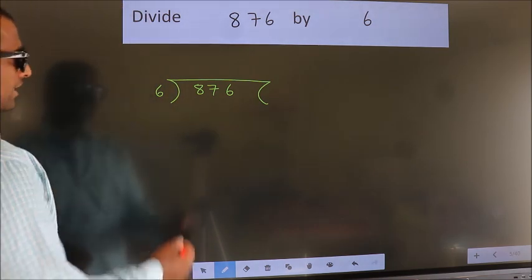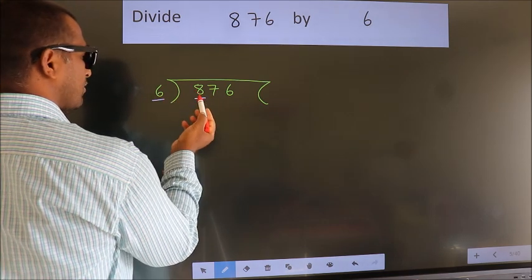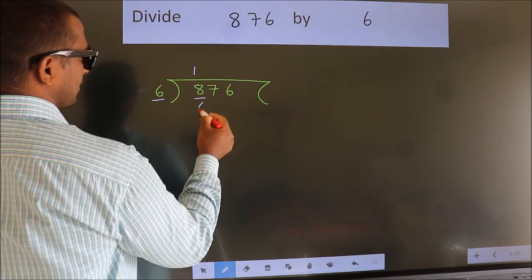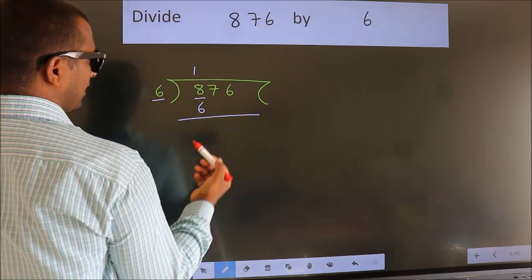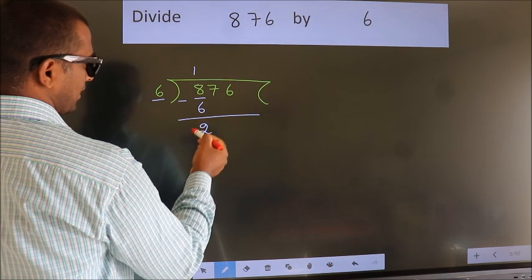Next. Here we have 8, here 6. A number close to 8 in 6 table is 6 ones, 6. Now we should subtract. We get 2. After this,